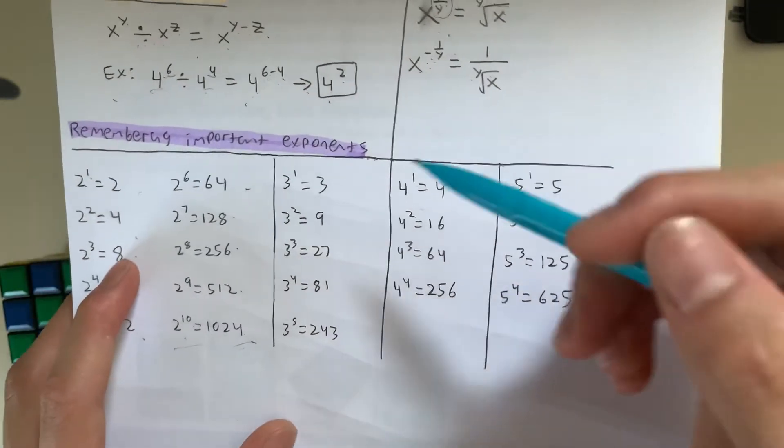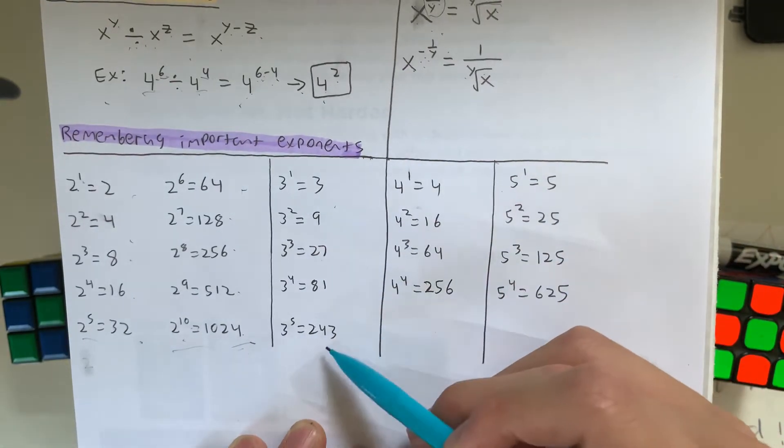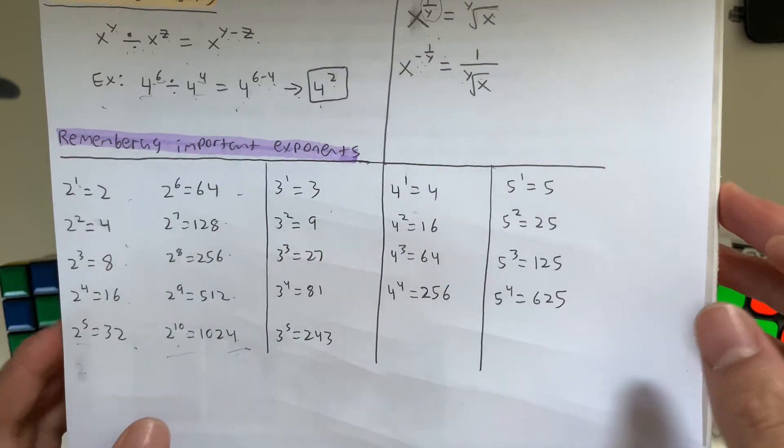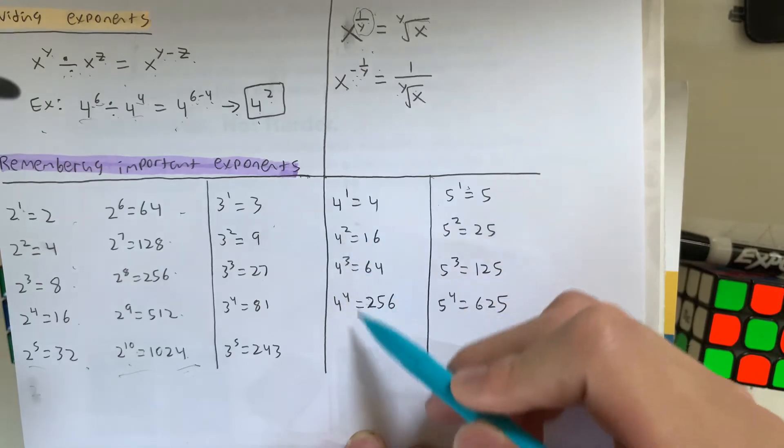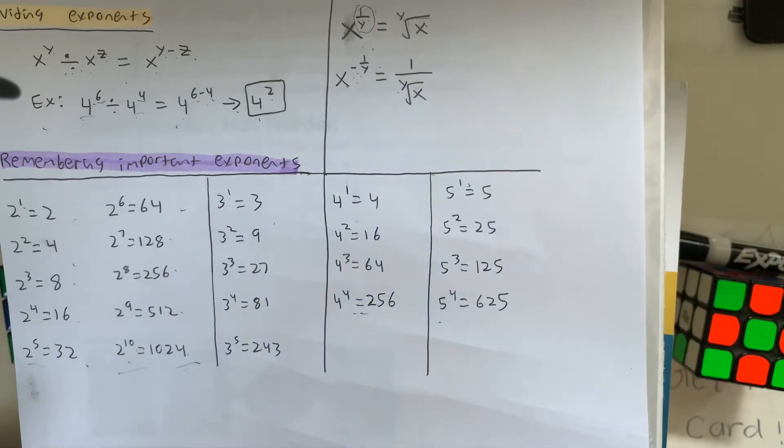And for the powers of 3, I recommend you guys memorize all the way up to 3 to the 5th power, which is equal to 243. That is recommended. And for 4 and 5, you only have to memorize to the 4th power, because these numbers are pretty big. So it's better if you memorize them.